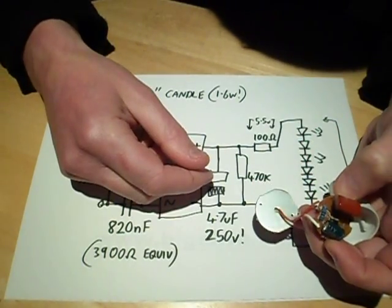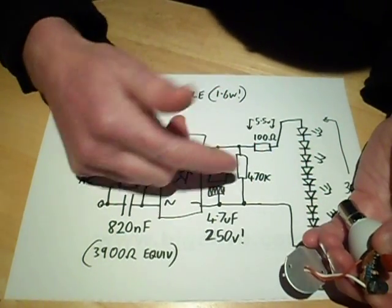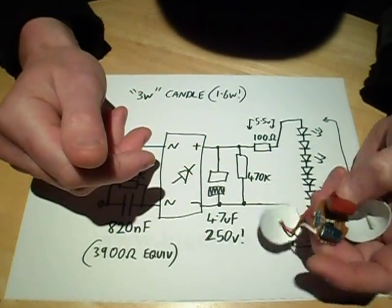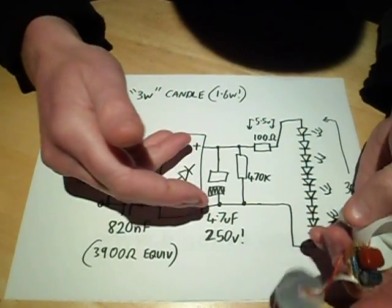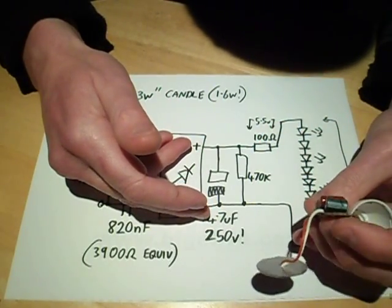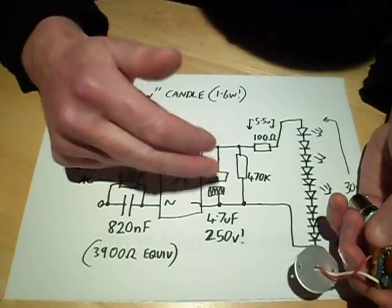Now that means that technically speaking, if the LEDs go open circuit, the voltage across this 250 volt capacitor will exceed 330 volts on a UK mains supply. So that's not a great design feature. There's another 470K resistor across that.